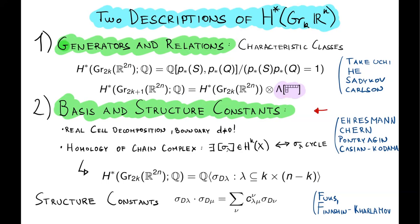For the other description, we have a cell decomposition into real cells and a boundary map, which is now no longer zero since we have odd-dimensional cells. We have to compute the chain complexes in order to determine which Schubert varieties have fundamental classes. It turns out that in the even-even case, these are generated additively by so-called double Schubert varieties. If you have a Young diagram lambda, you can associate its double by taking the same Young diagram and subdividing each square into four smaller sub-squares. The structure constants of these Schubert varieties turn out to be the same Littlewood-Richardson structure constants.